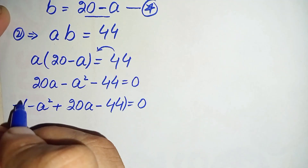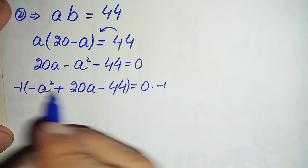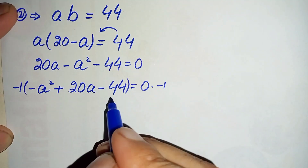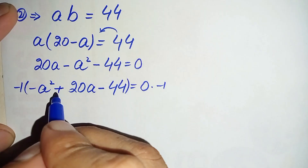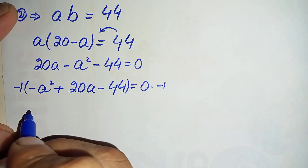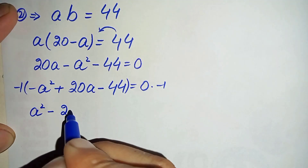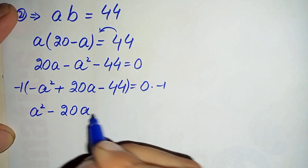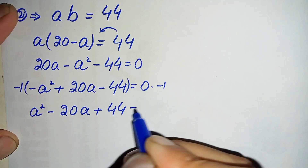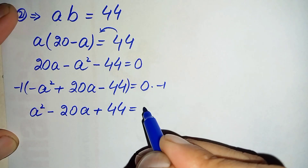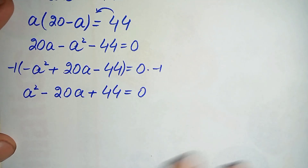We need the coefficient of a squared to be positive, so we multiply both sides by negative one. The sign of each term changes, giving us a squared minus 20a plus 44 = 0. This is our quadratic equation.